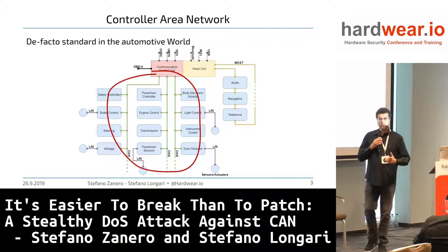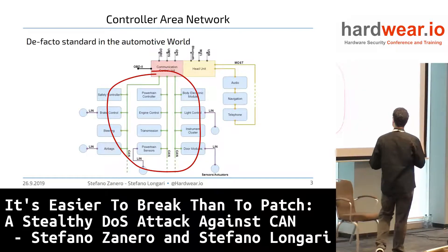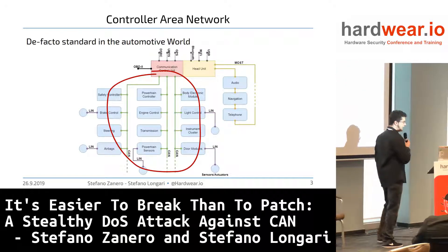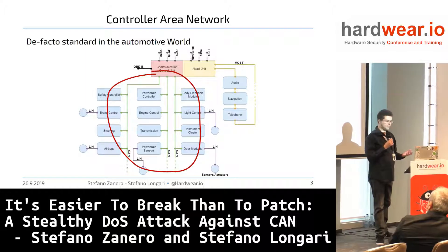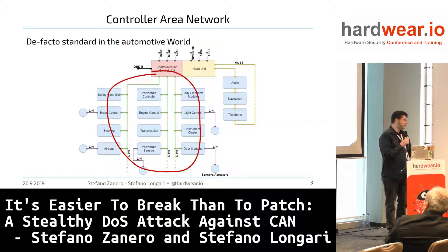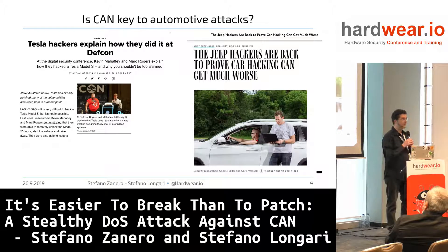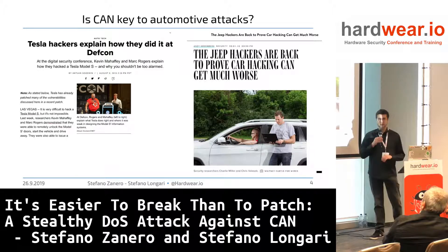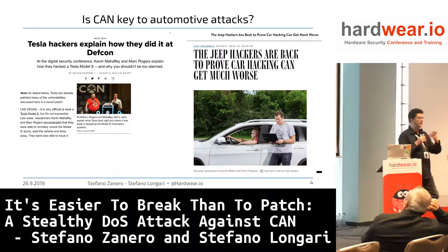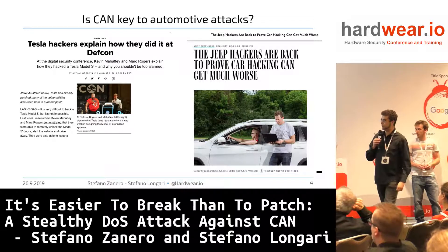We are going to talk about CAN. Being this a hardware conference, we don't really need a lot of introduction, but just as a way to get us started: CAN is the most used standard in the automotive world for on-vehicle networks, connecting all of the critical components on the vehicle, and also most of the not-so-critical components — which is part of the problem. If you are here, with an entire automotive village outside, you know about the attacks on vehicles.